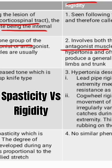Therefore, there is more uniform hypertonia in rigidity, and it is often so distributed as to produce a general attitude of flexion of the limbs and trunk.